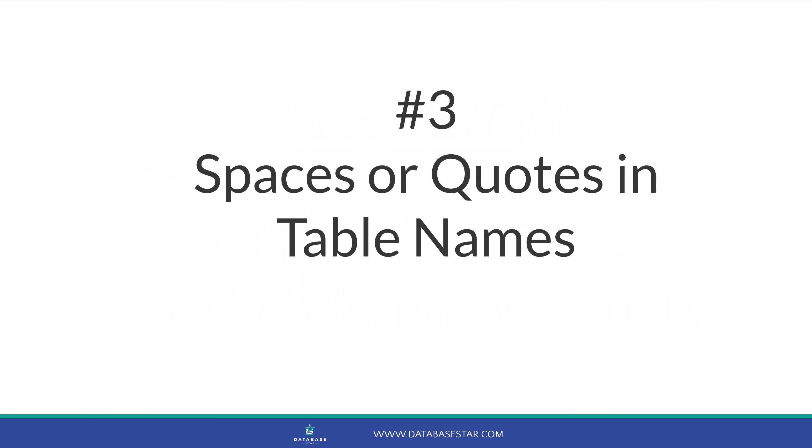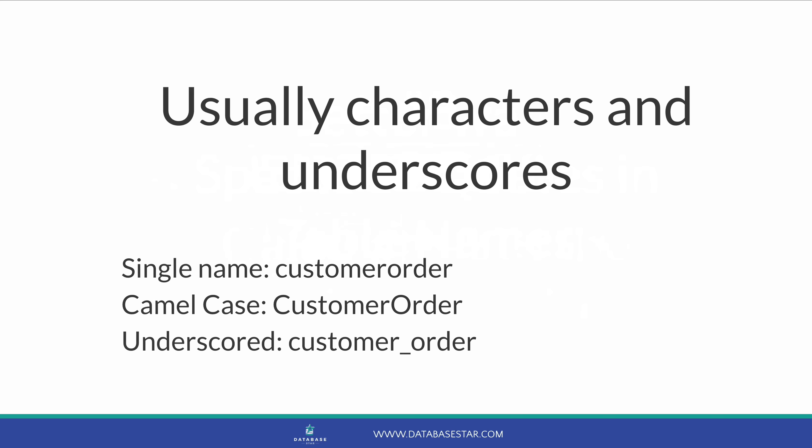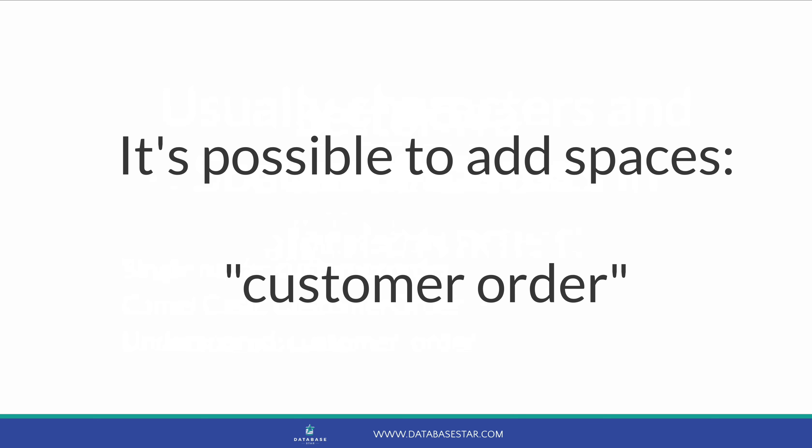The third mistake is using spaces or quotes in table names. Most databases expect table names to be made up of characters and underscores. They can be written as a single name like customer order, using camel case, or with underscores to separate words like customer_order. However, it is possible to add spaces to table names by enclosing the name in double quotes, creating a table name like 'customer order'. This may seem like a good idea to make names more readable.